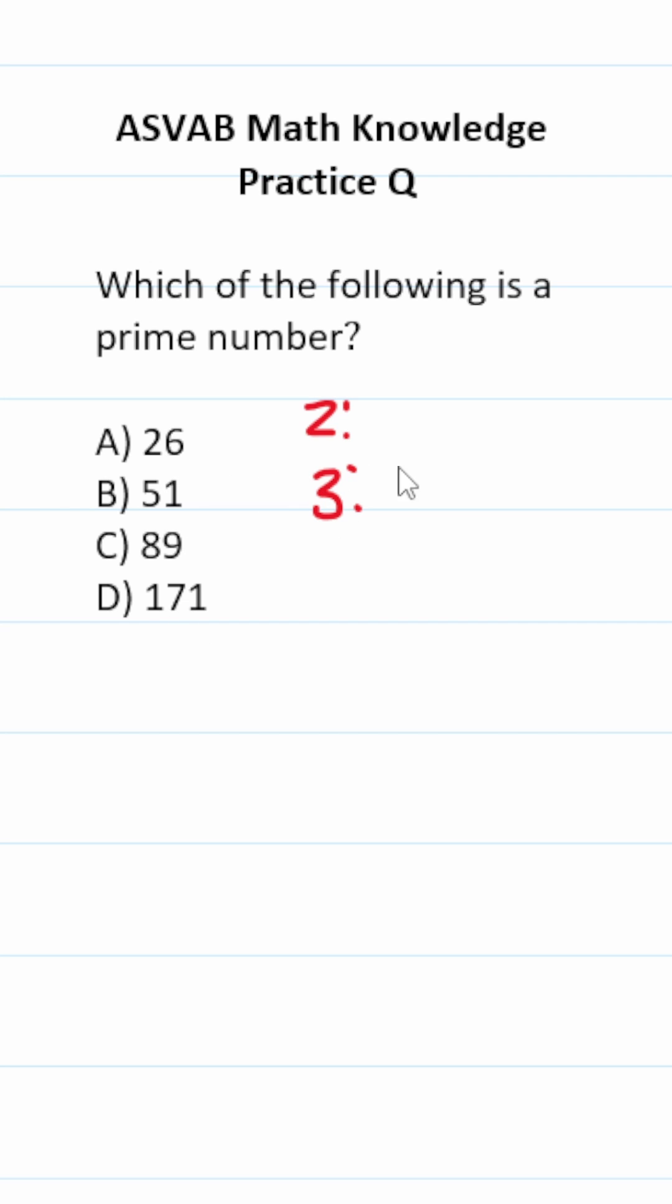The divisibility rule for two says this: if the last digit in your number is even, then it is divisible by two and can't be prime. We look at answer choice A. This ends in six, which is even. Therefore, 26 is divisible by two and can't be prime.